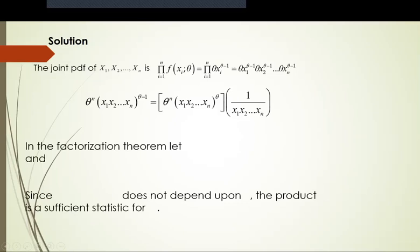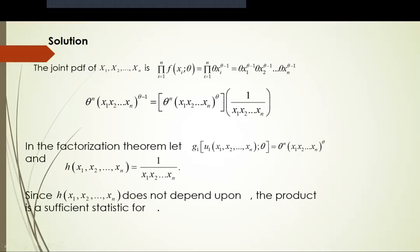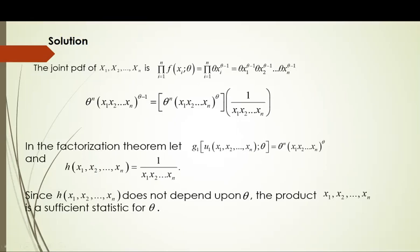By using the Factorization Theorem, we let function g contain theta: g = theta^n * (x1 * x2 * ... * xn)^theta. Function h is written as 1 over (x1 * x2 * ... * xn). Since h does not depend upon theta, the product x1 * x2 * ... * xn is a sufficient statistic for theta. Thus, by the factorization theorem, the joint PDF is divided into two parts: one containing xi and theta, and the other containing x1, x2, ..., xn without depending on theta.